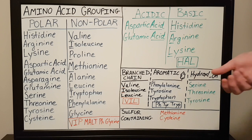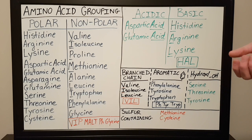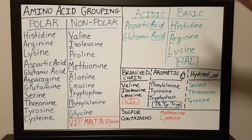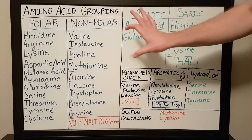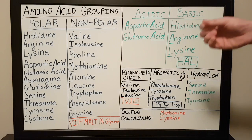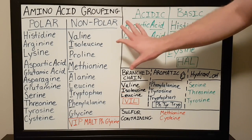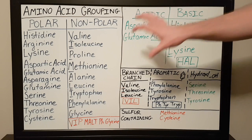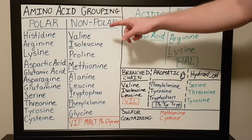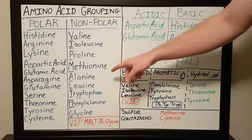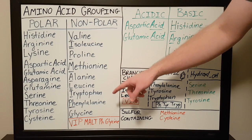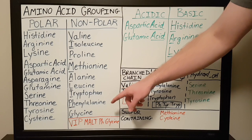That's a lot of amino acids to try to remember which are polar. But an easy way to remember which are the polar ones is to actually look at which ones are nonpolar. The nonpolar amino acids are valine, isoleucine, proline, methionine, alanine, leucine, tryptophan, phenylalanine, and glycine.